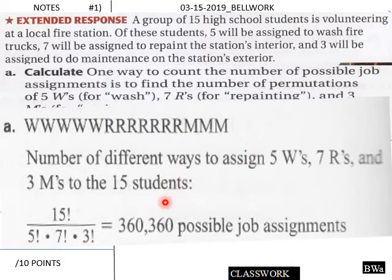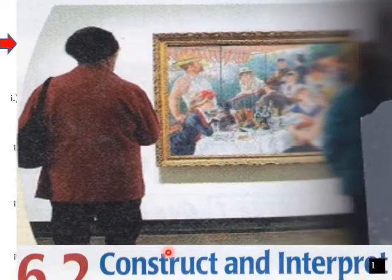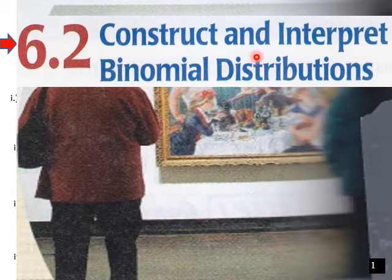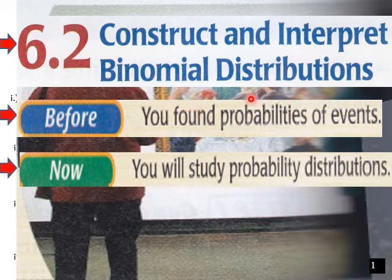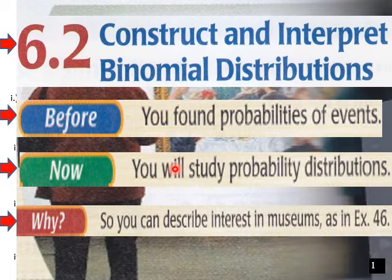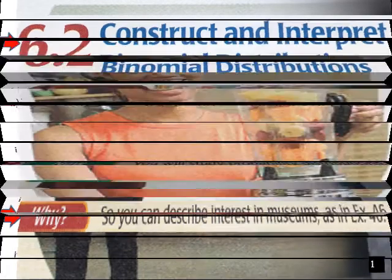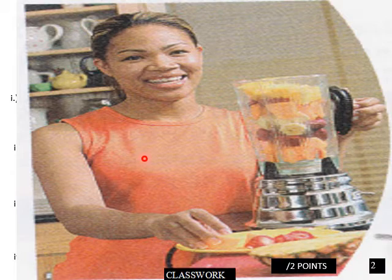Okay, construct and interpret binomial distributions. You found probabilities of events from 6.1, and you will study probability distributions so you can describe certain things like museums.